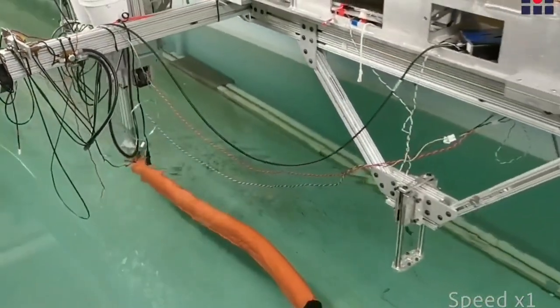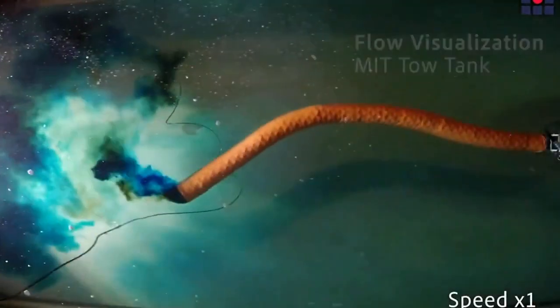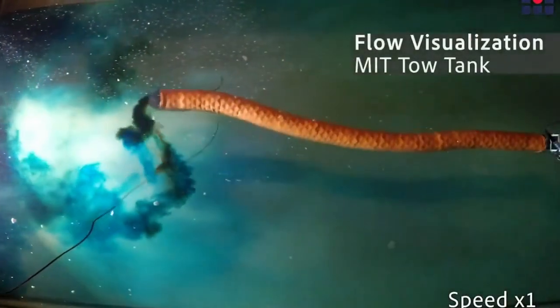MIT's Robotuna, for example, was composed of about 3,000 different parts and took about two years to design and build.